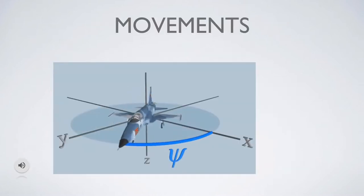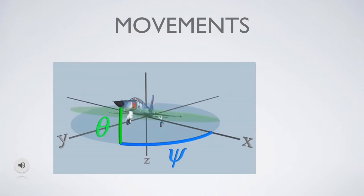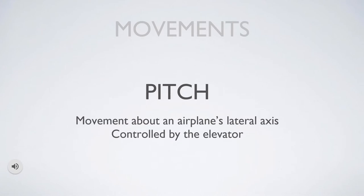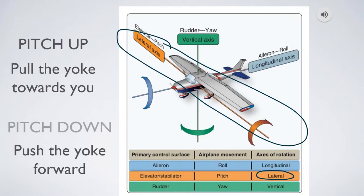First, let's look at the way an aircraft moves in three-dimensional space. Pitch is the movement about the airplane's lateral axis and it's controlled by the elevator. The lateral axis runs laterally, and pitch is the movement about this axis. As the pilot moves the elevator with the yoke, pull towards you to pitch up and push it forward to pitch down.